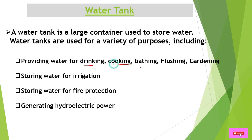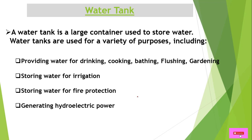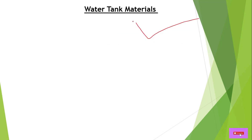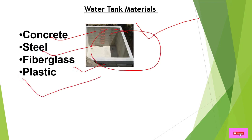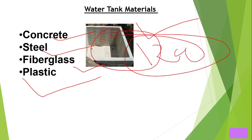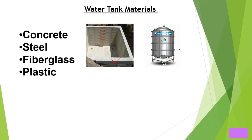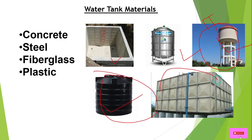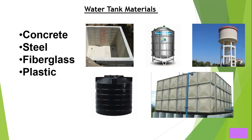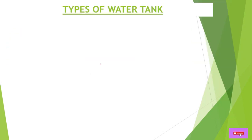Generally for buildings, water tanks are used for drinking, cooking, bathing, flushing, irrigation, and firefighting systems. In terms of materials, tanks are made up of concrete, steel, fiberglass, and plastics — including RCC concrete, steel overhead tanks, plastic, and FRP types.